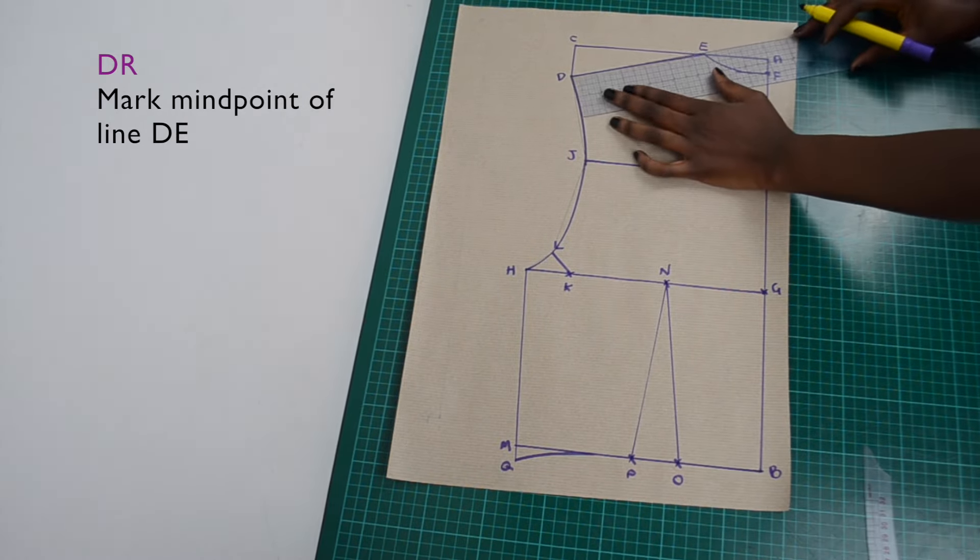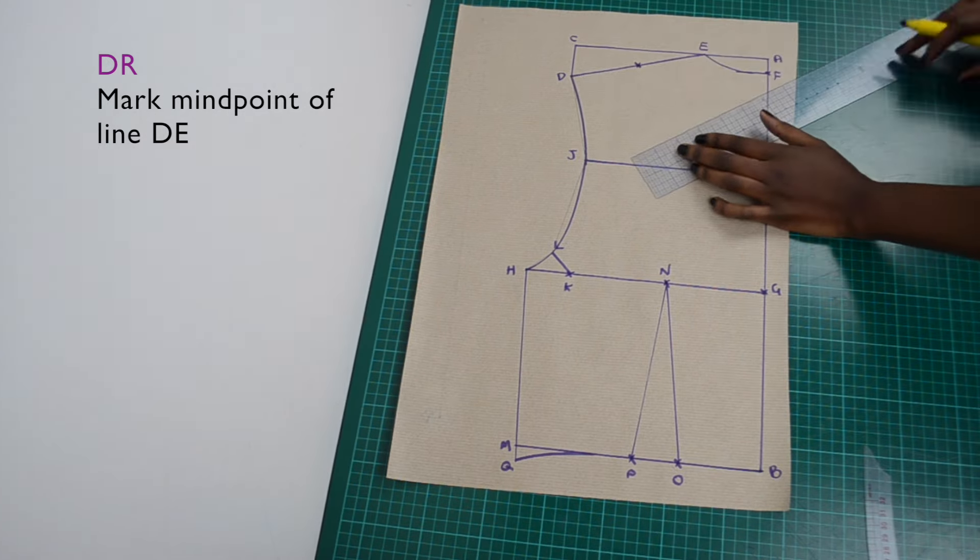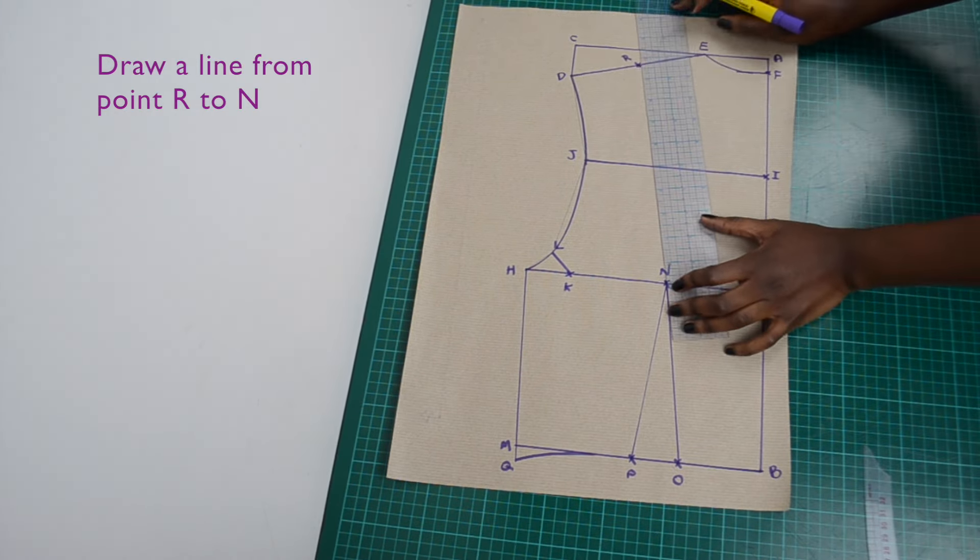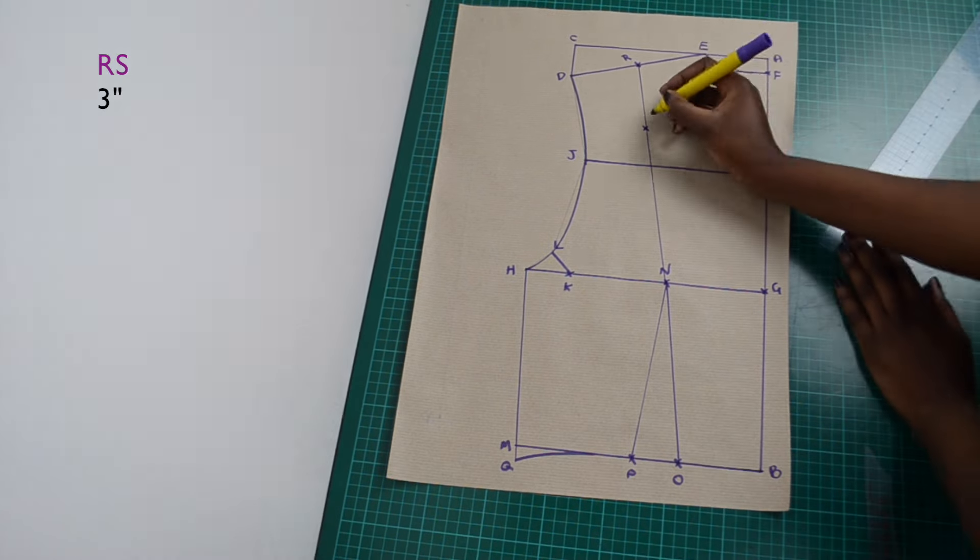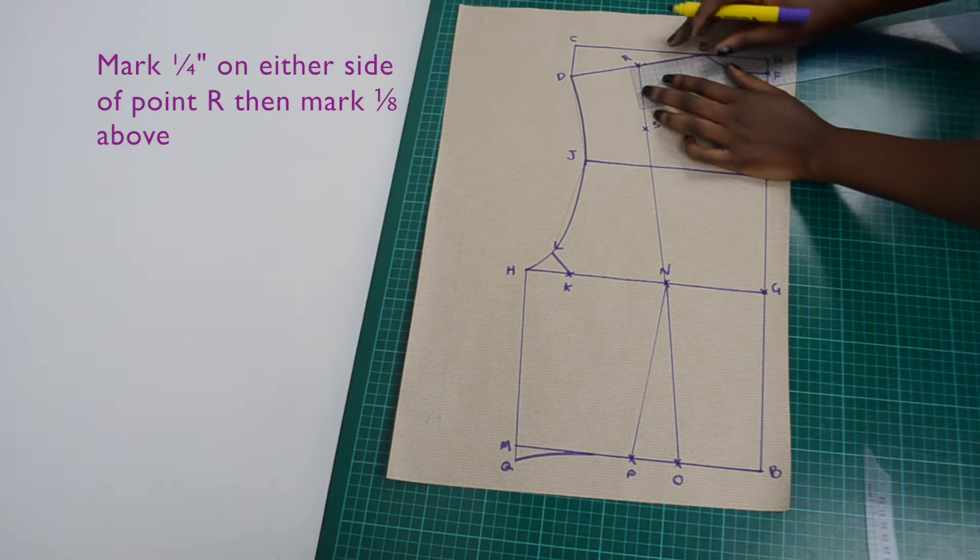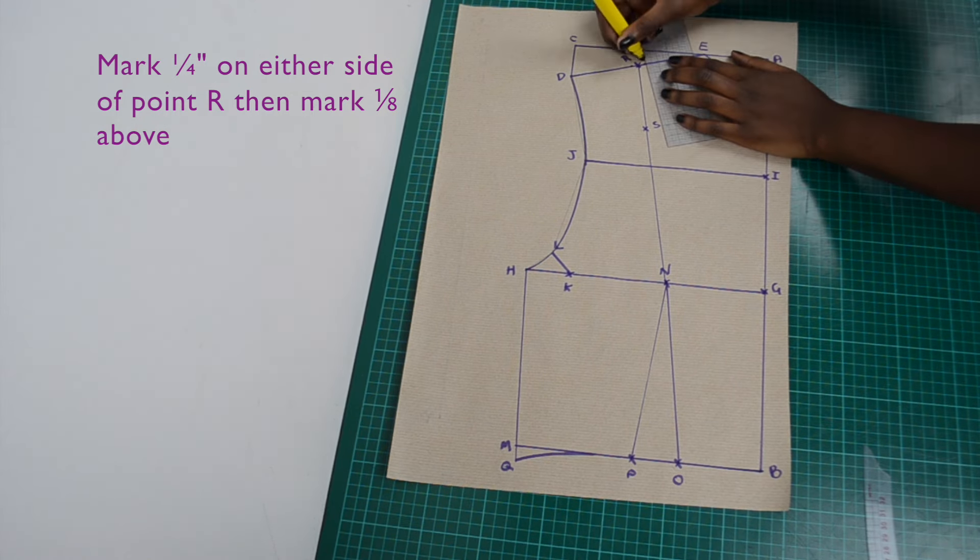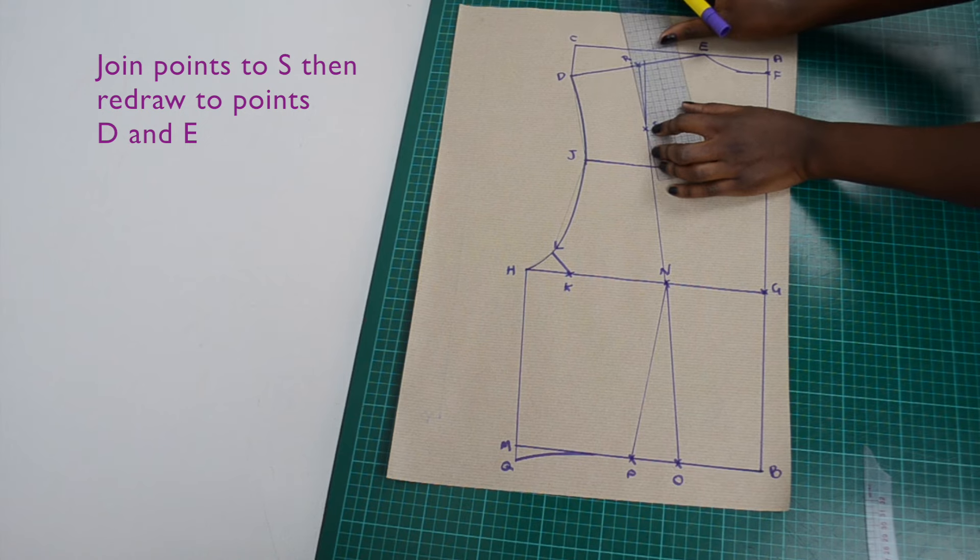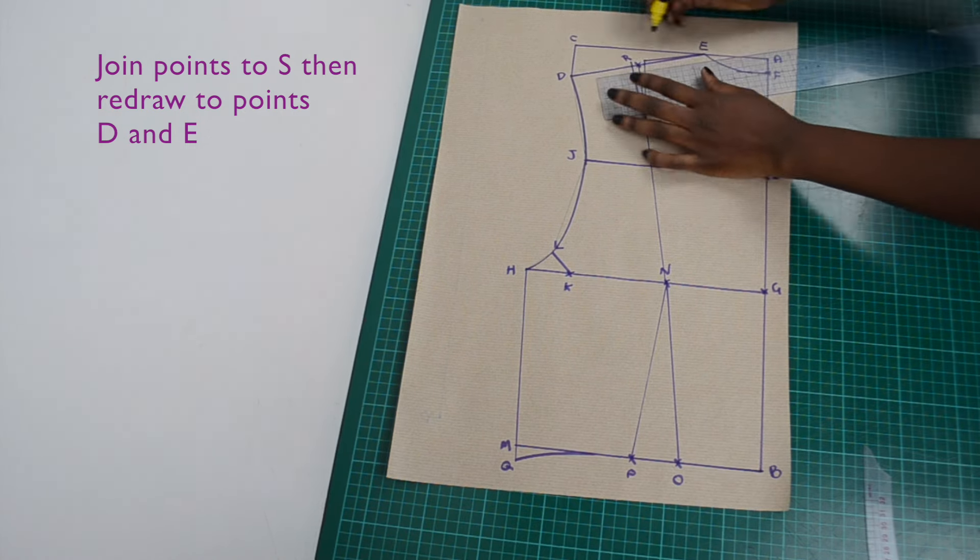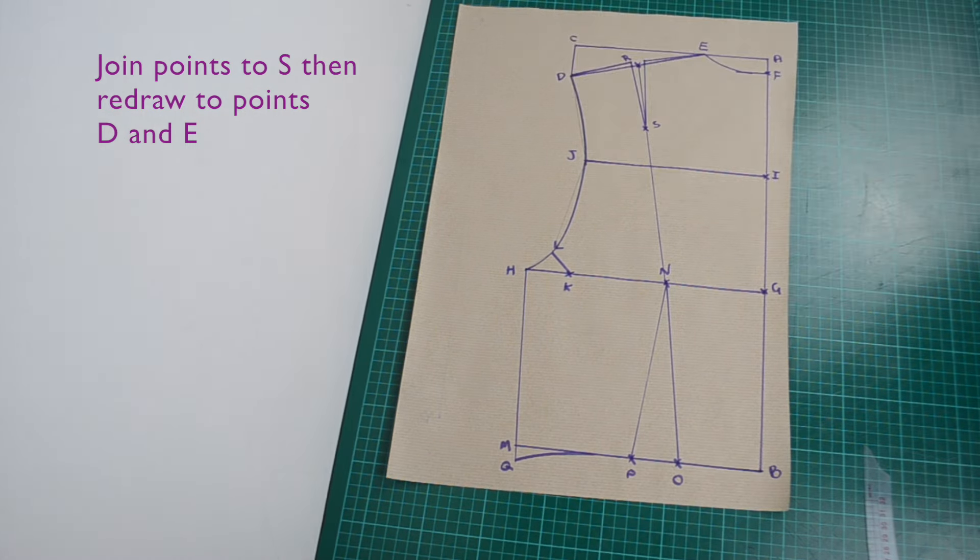On the shoulder line mark the midpoint. Then on either side of the midpoint measure and mark one quarter of an inch, then above those points mark one eighth of an inch. From point S draw a line to those points, then redraw the shoulder to points D and E.